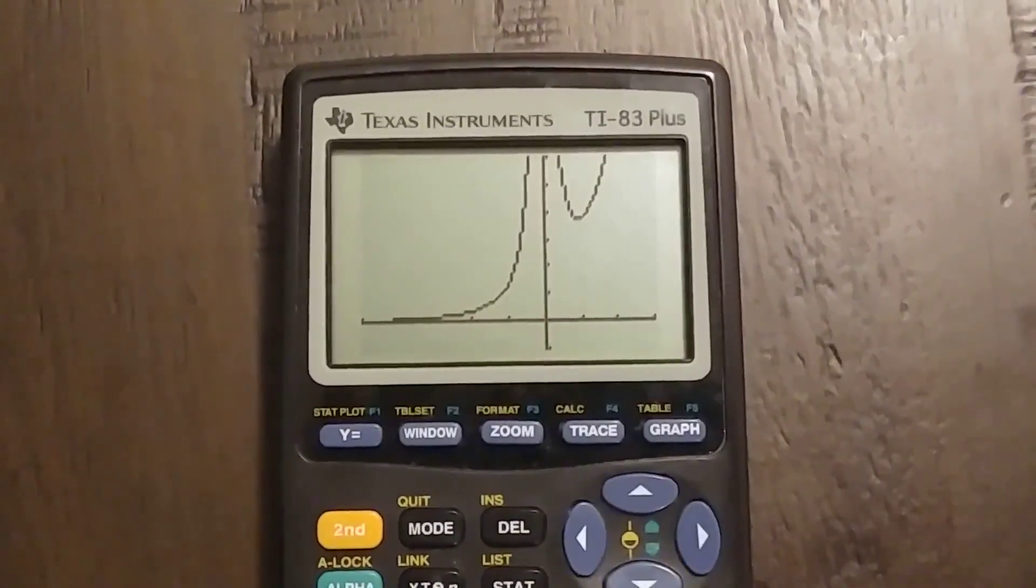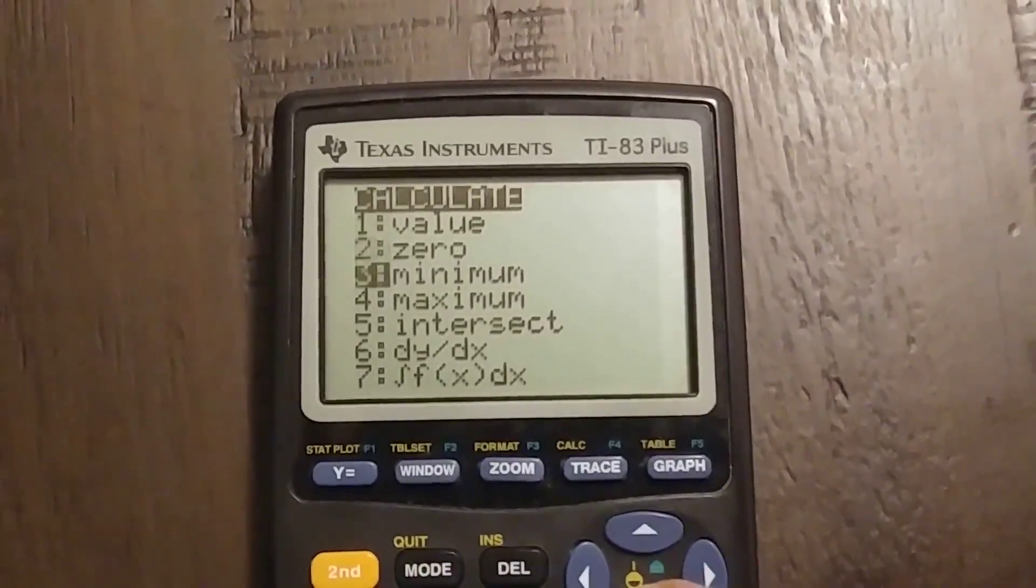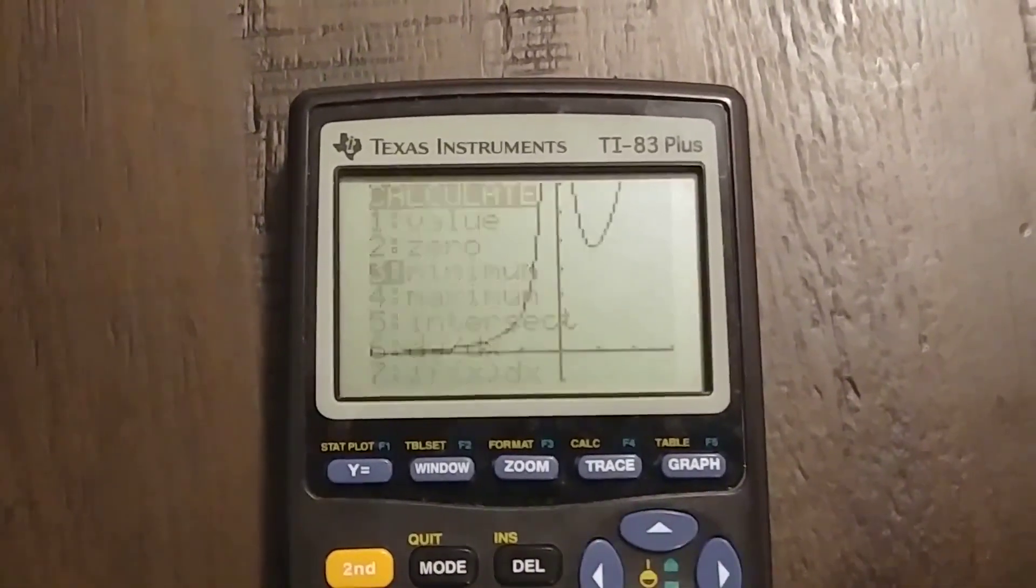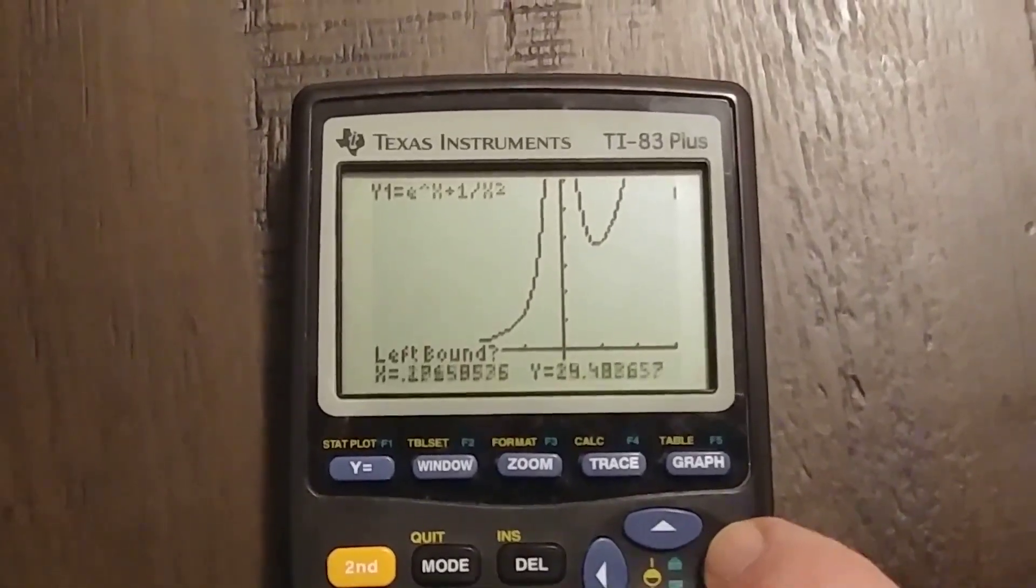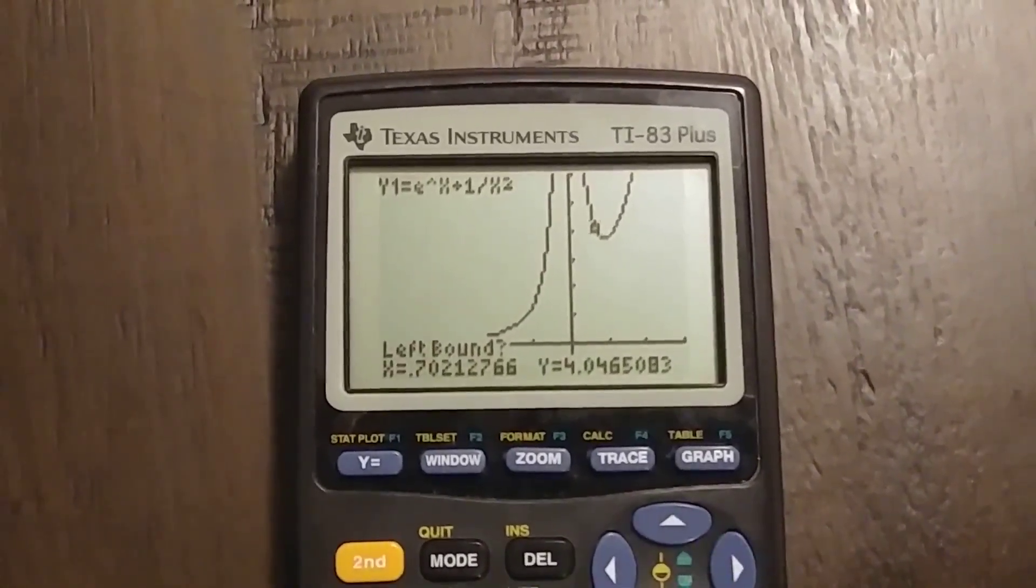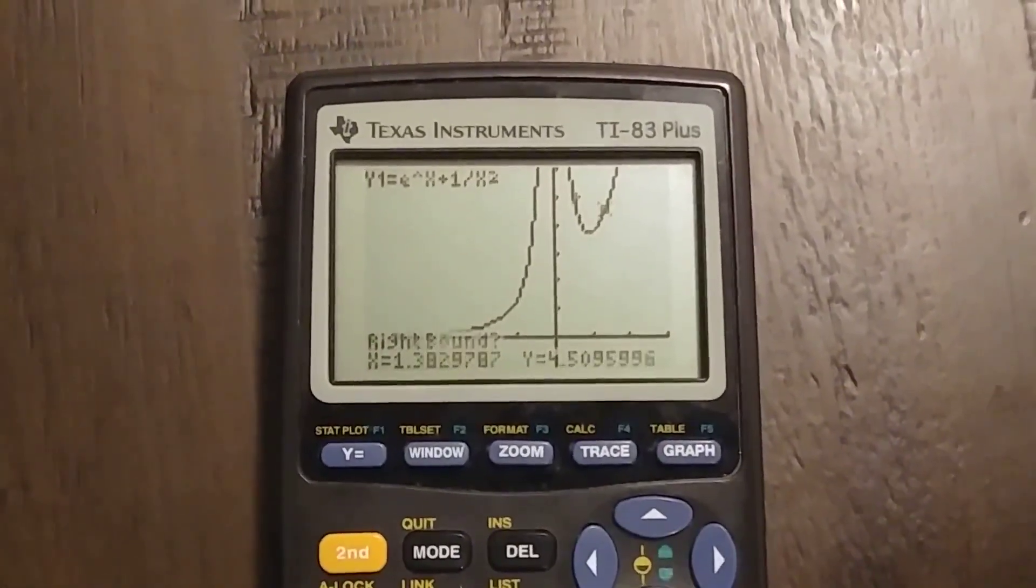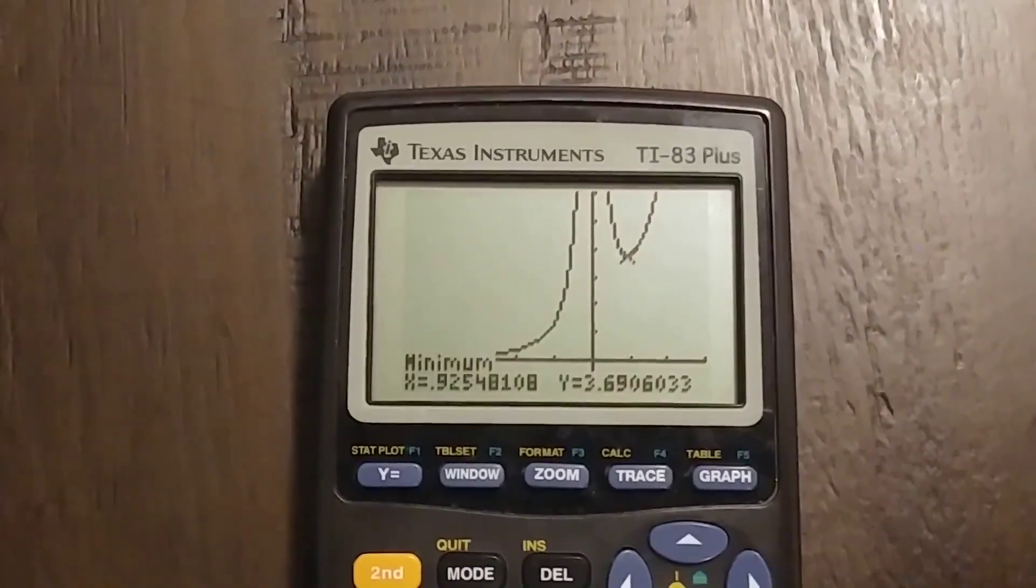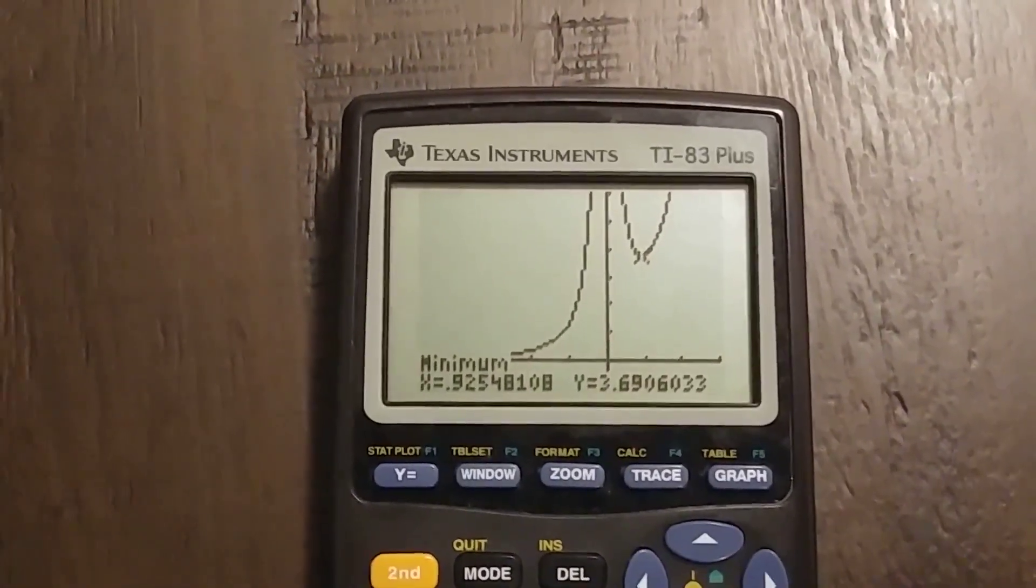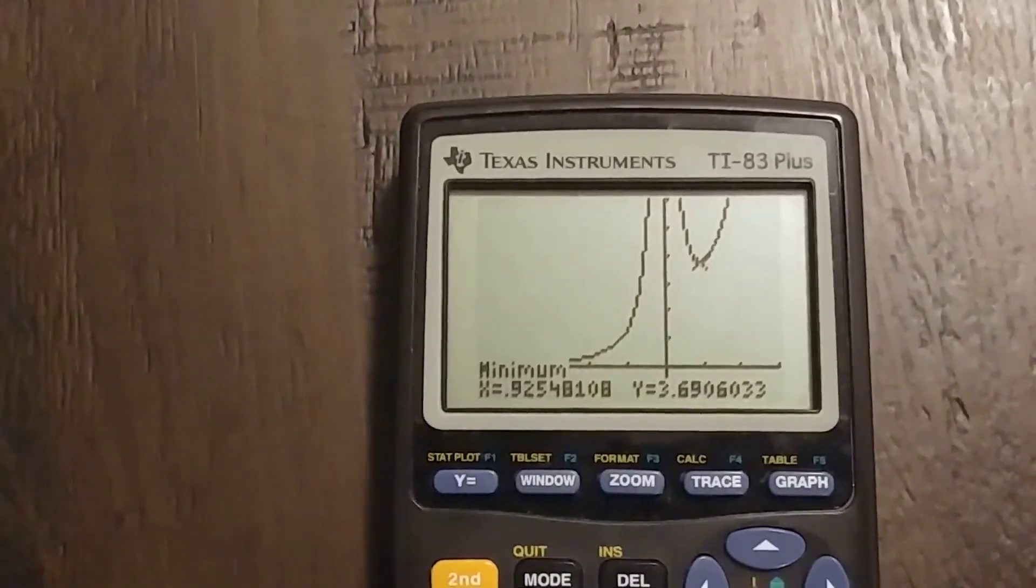If I want to calculate the minimum, like last time, I just go down to point number three, cursor over, come a little bit to the left of the minimum, and then go a little bit to the right of it, calculate it, and you can see it's 0.93 roughly. I said about 0.9, and the y value turns out to be about 3.7.